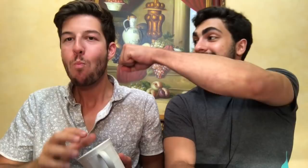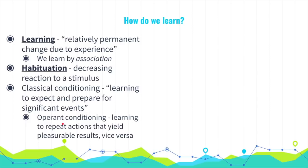There are two other key terms: classical conditioning is learning to expect and prepare for significant events, while operant conditioning is learning to repeat actions that yield pleasurable results, or to avoid those that don't.